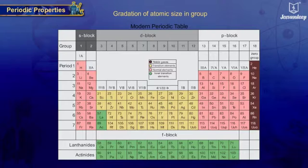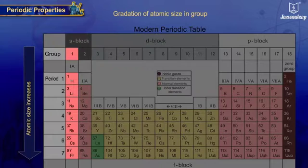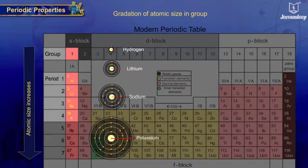Gradation of atomic size in a group: Atomic size increases from top to bottom in a group as new shells are added, taking electrons in the outermost shell farther from the nucleus.